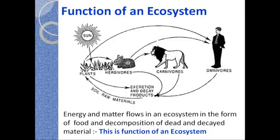Whenever we study this behavior of any ecosystem — the transfer of energy and matter — it reflects its functional aspect. The function of ecosystem means knowing how energy is transferred from one organism to another: what fraction of energy is transferred from producers to herbivores, what fraction goes from herbivores to carnivores. All this complex study reflects the functional aspect of any particular ecosystem. Energy and matter flows in any ecosystem in the form of food and decomposition of dead and decayed material — and this is the function of an ecosystem.